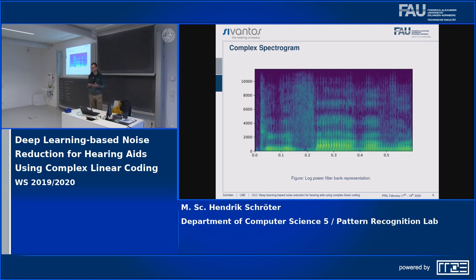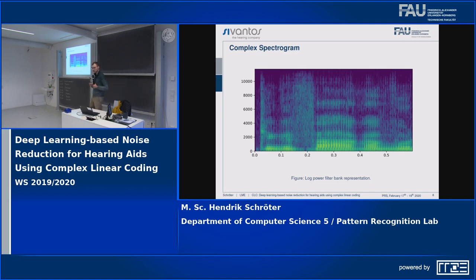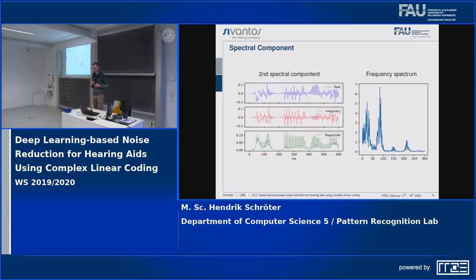How can this help us? The spectrogram with very low resolution also has some periodic structures. Here we can see a log-power spectrogram and we can see the periodic structure. When we look at just one frequency band — one spectral component — we can see that the real and imaginary parts are also periodic. The frequency spectrum of just this one spectral component shows clear spikes, and LPC should be able to model those spikes.